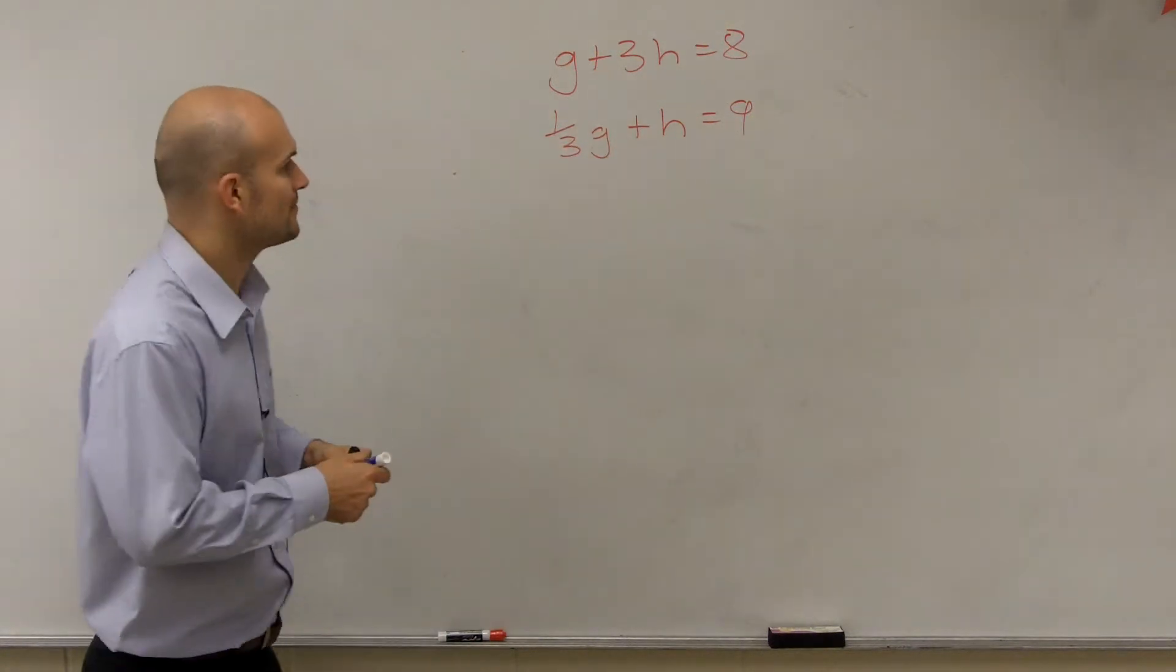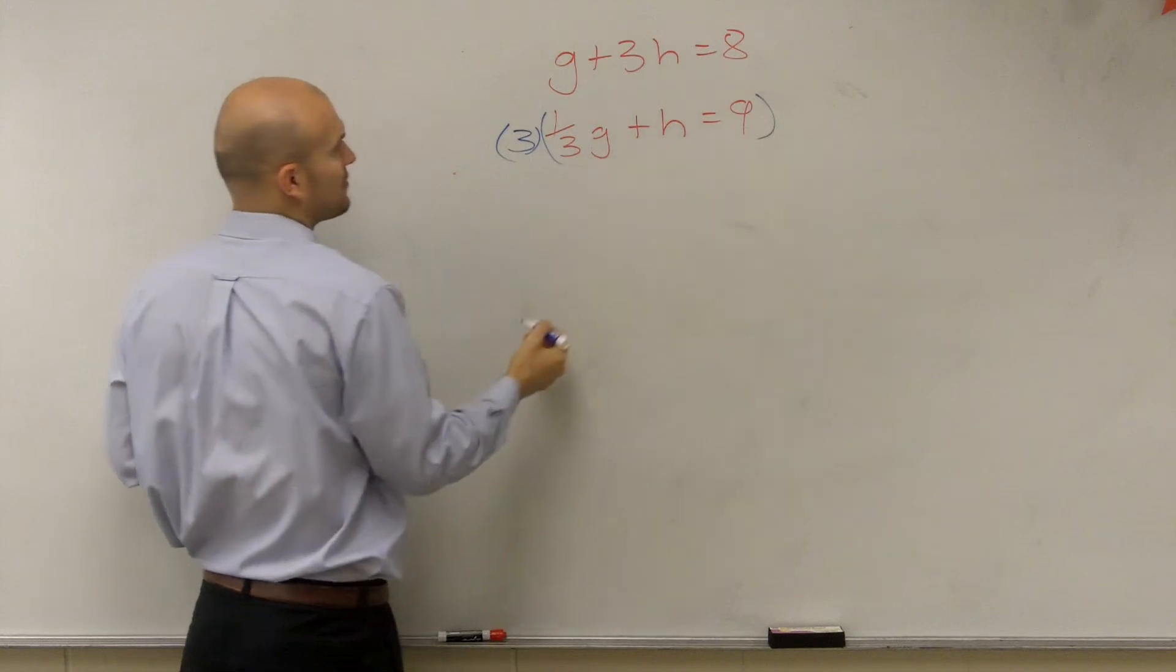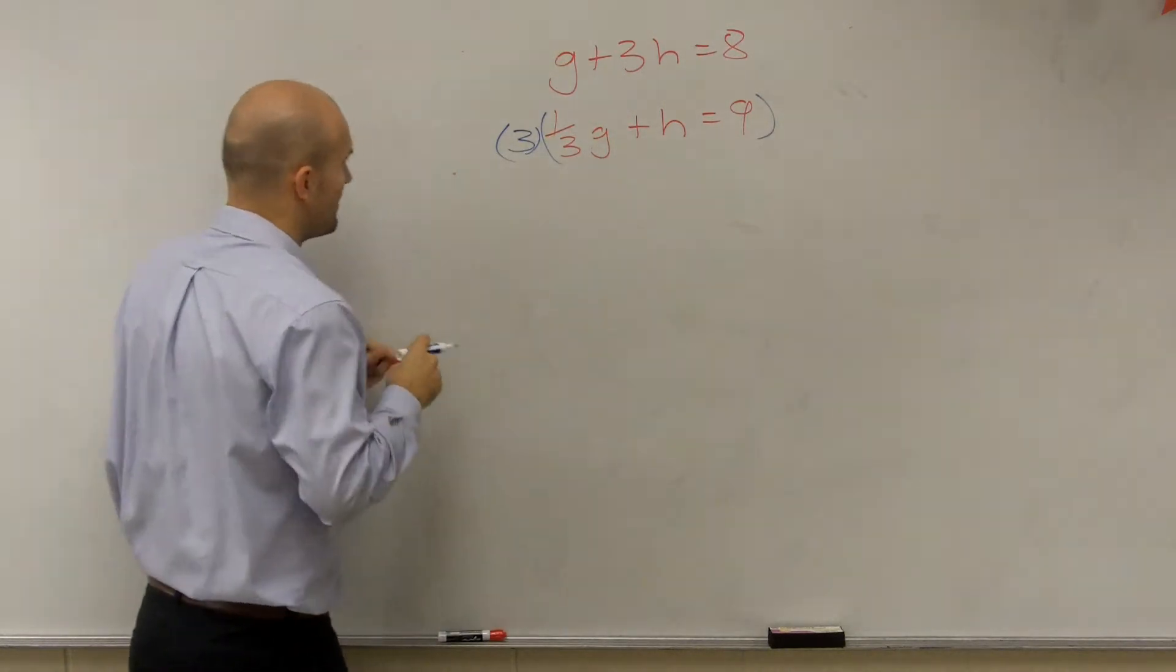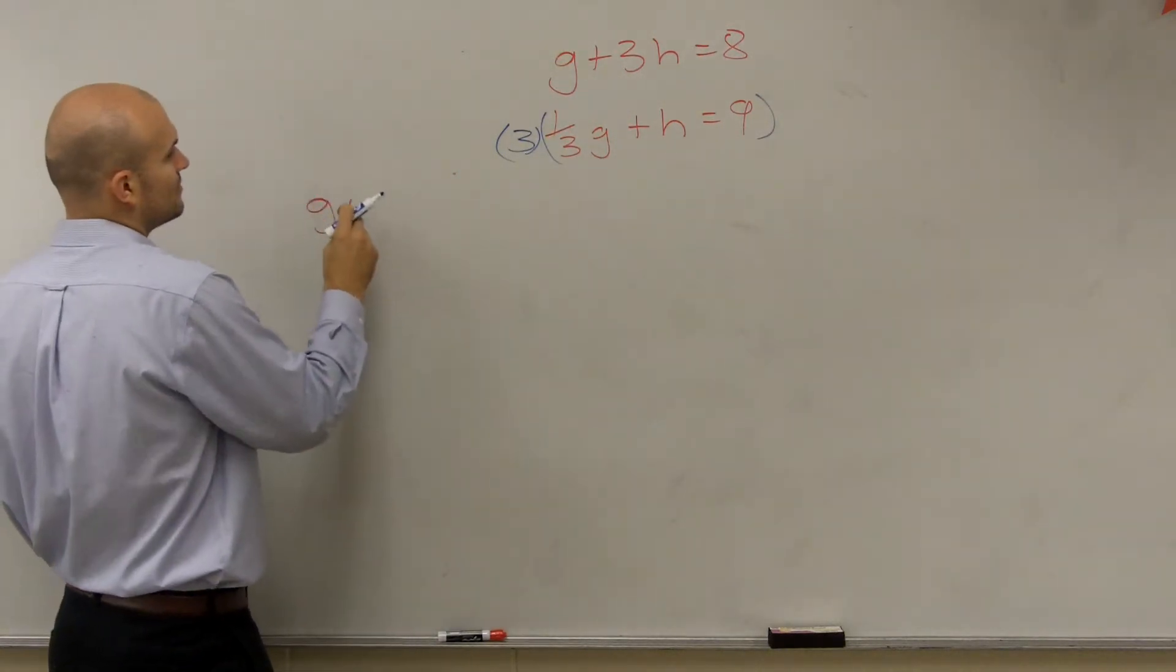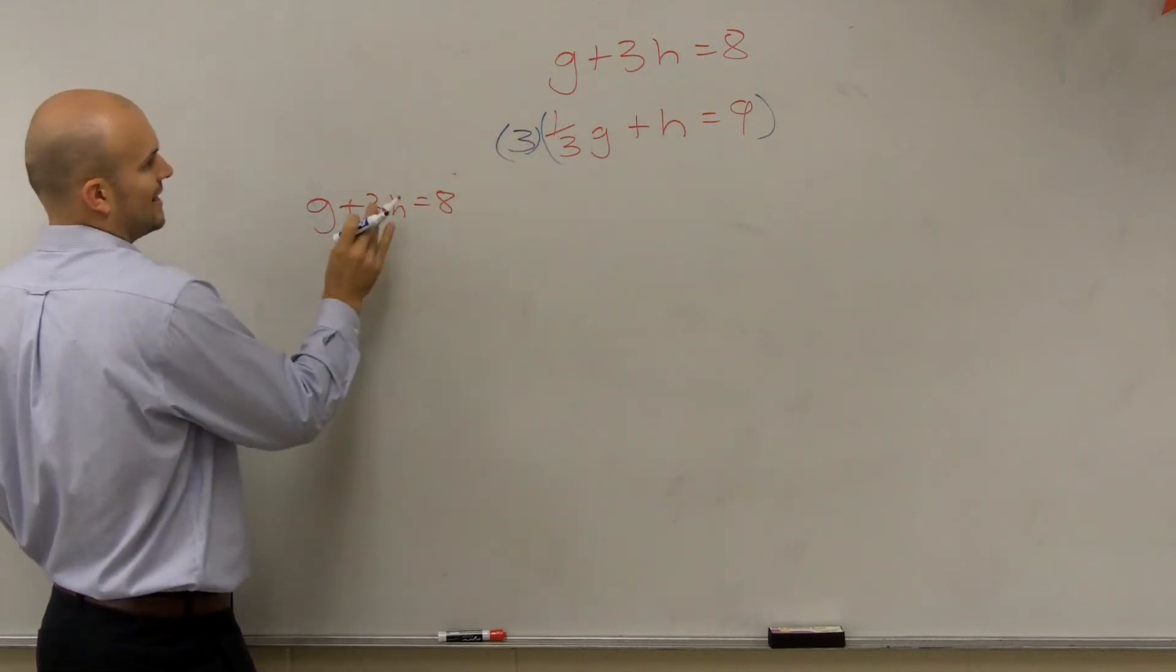And to get rid of the fraction, if I wanted to, I could multiply this whole expression by 3. And now I would have g plus 3h equals 8. And then 3 times 1/3.